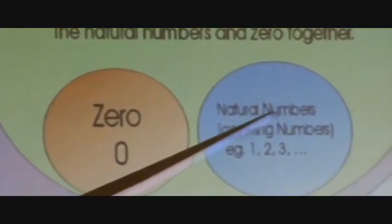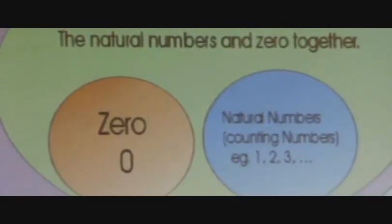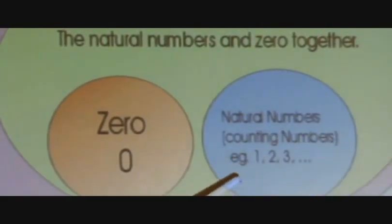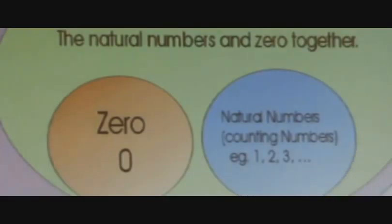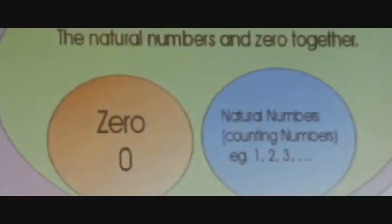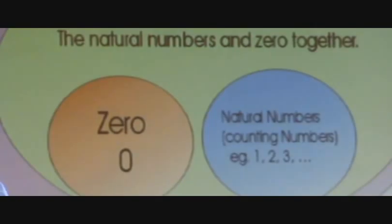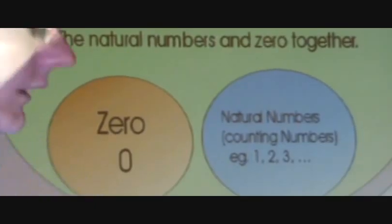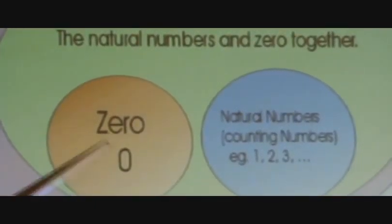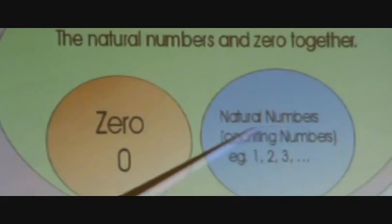This became known as the natural numbers or counting numbers. So in math we give that a name. Example: one, two, three, dot, dot, dot. The dot, dot, dot means that this set of numbers keeps on going forever and ever. You can keep on counting forever and ever if you want to in our system, and it would still be called a natural number. Notice one thing though. Grog and his buddy Doug had no need for the number zero. The number zero is over here, separate from the natural numbers.